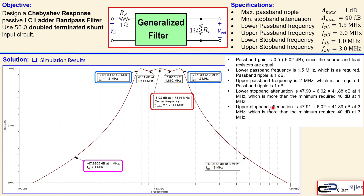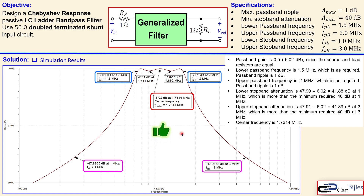For the upper stopband frequency, the attenuation is 41.89 dB, which also exceeds the required 40 dB minimum. The center frequency is shown at 1.7314 MHz, which is where the passband gain is maximum. All specifications are met, and this circuit will do the job for this design.